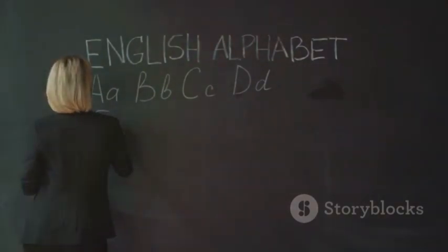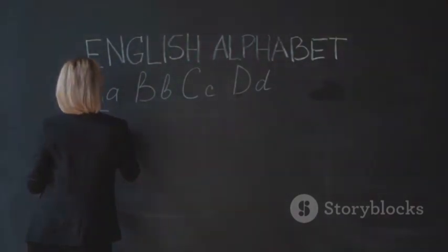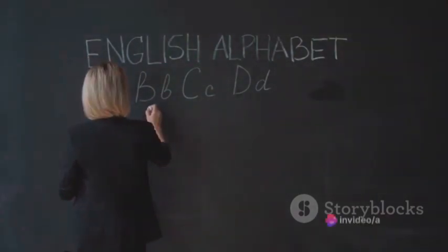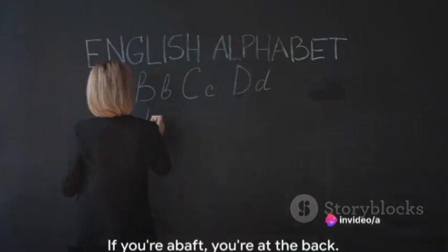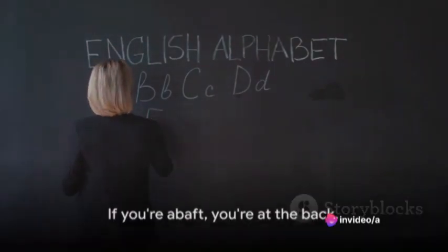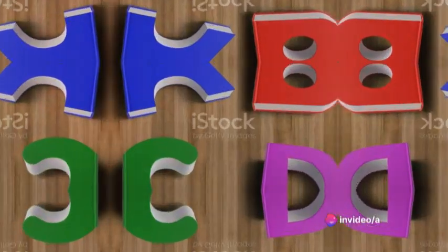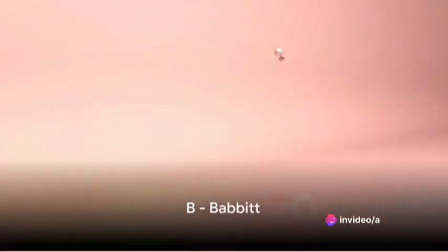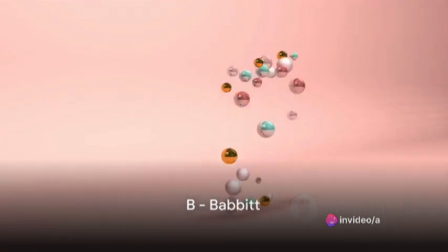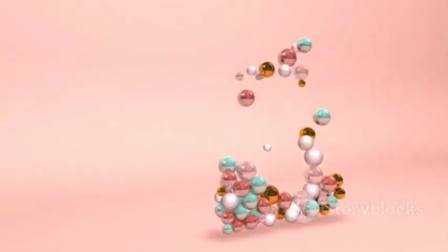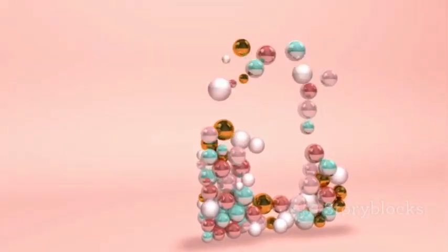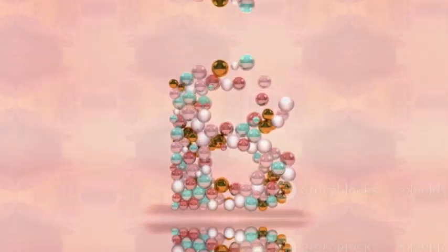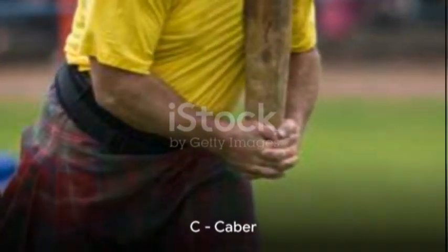Starting with A, we have abaft, a nautical term referring to the rear of a ship. If you're abaft, you're at the back. B brings us to babbitt, a word with a dual function — it can mean both an unthinking conformist and a type of soft metal used for bearings.